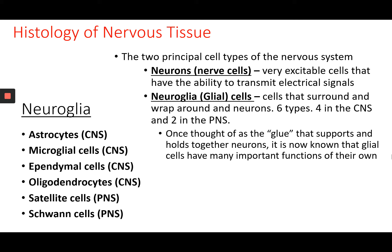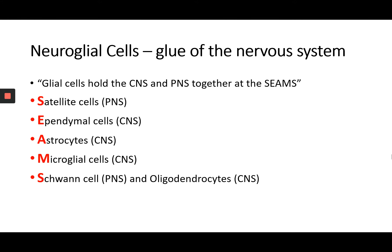Astrocytes, microglial cells, ependymal cells, and oligodendrocytes are all found in the central nervous system, whereas satellite cells and Schwann cells are located in the peripheral nervous system. A mnemonic to remember the six neuroglia cells is: 'glial cells hold the central nervous system and peripheral nervous system together at the SEAMS' — S for satellite cells, E for ependymal cells, A for astrocytes, M for microglial cells, and the last S for Schwann cells and oligodendrocytes, which are paired because they share the same function: both create myelin sheaths, just in different locations.